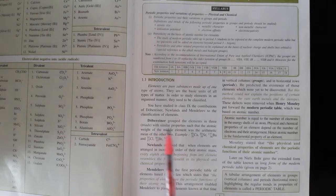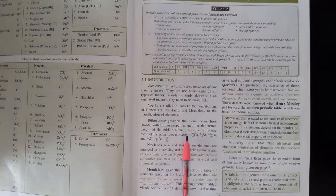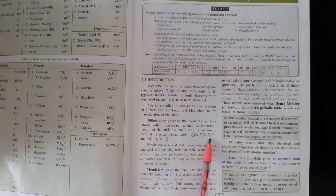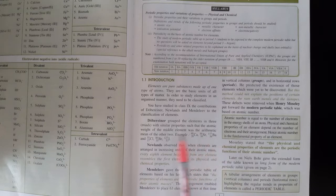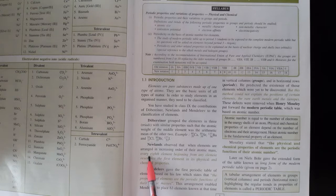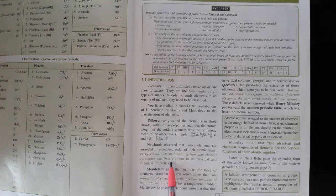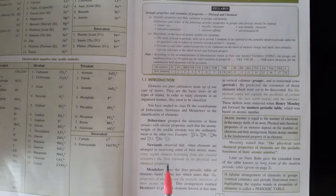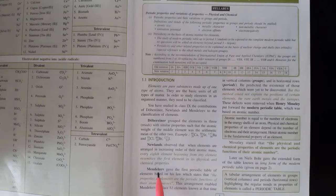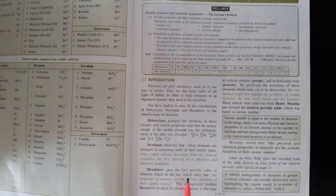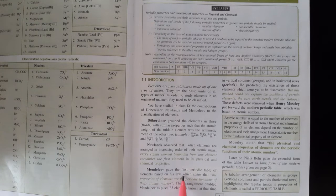Dobereiner took three triads. First and third ka arithmetic mean calculated. Newlands said that first element, after that the eighth element came, both their properties will be the same, they resemble. Mendeleev - he gave the first periodic table of the elements, which was based on a law.